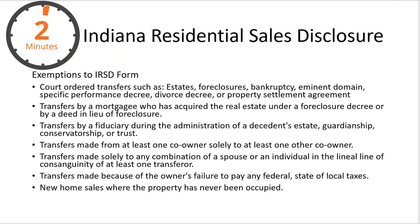The last exemption is there's no residential sales disclosure from the initial builder to the very first occupant. That's when they use the other form that the builder signs — the certificate of occupancy. So basically, if it's not the true owner selling the property, like in bankruptcies, foreclosures, tax sales, or share sales, those aren't required. If it's transferred between co-owners or between family members, it's also not required.